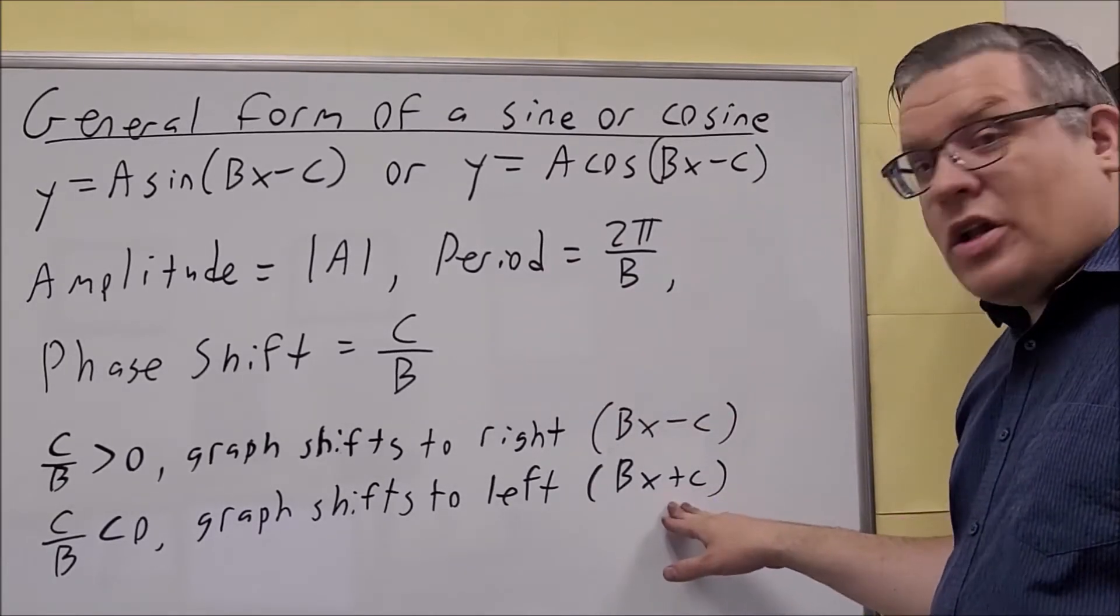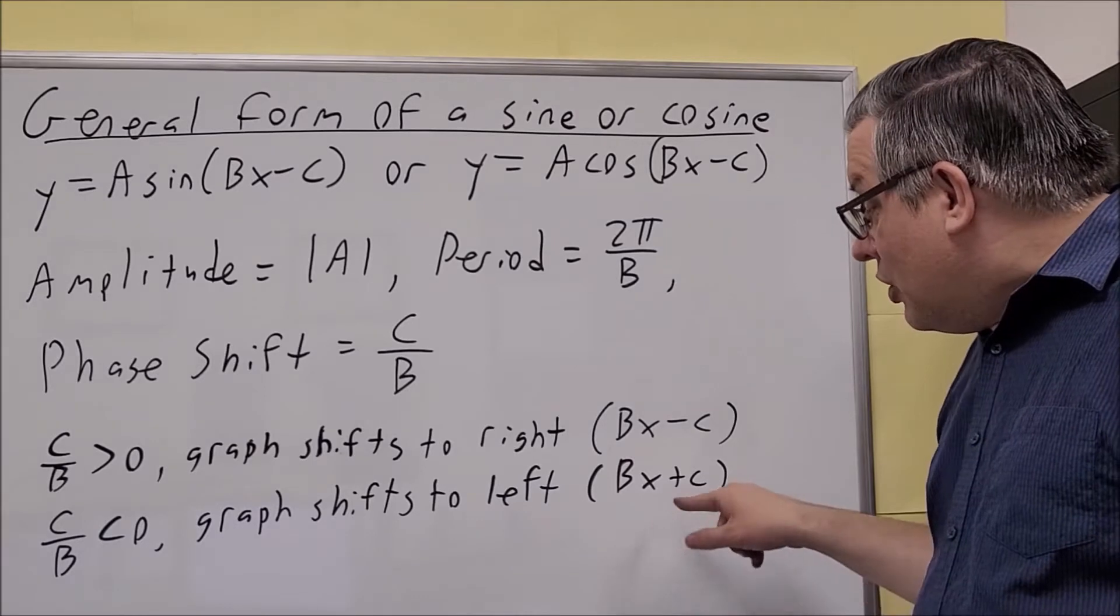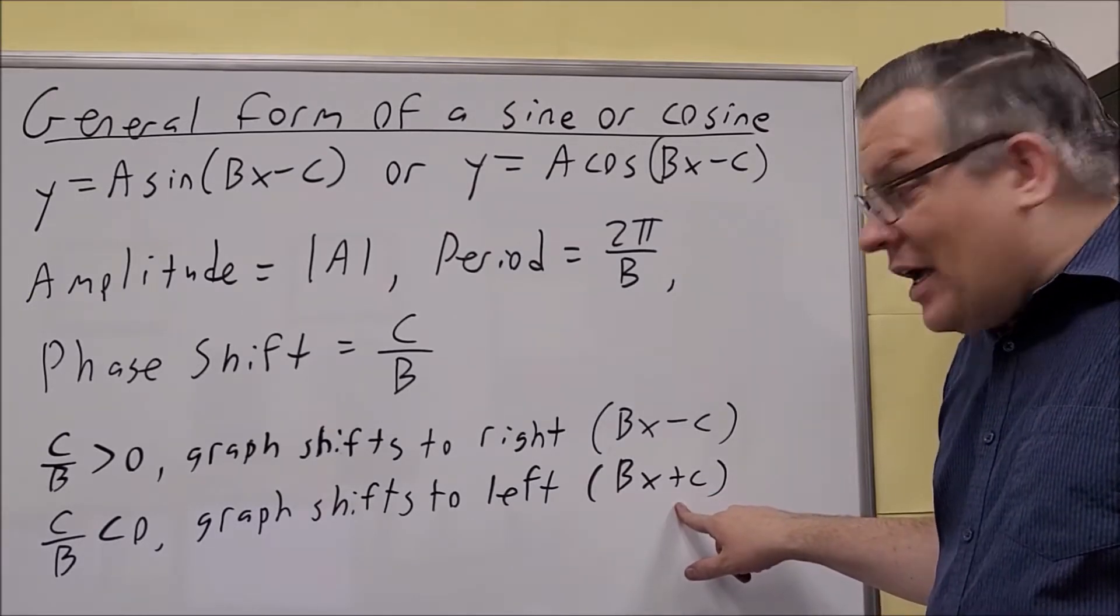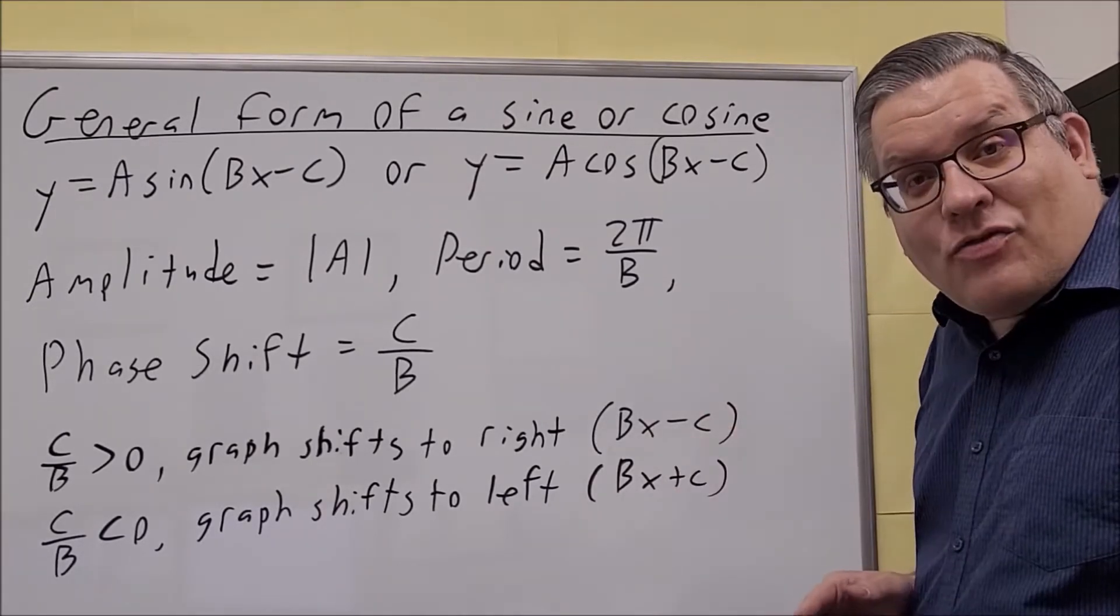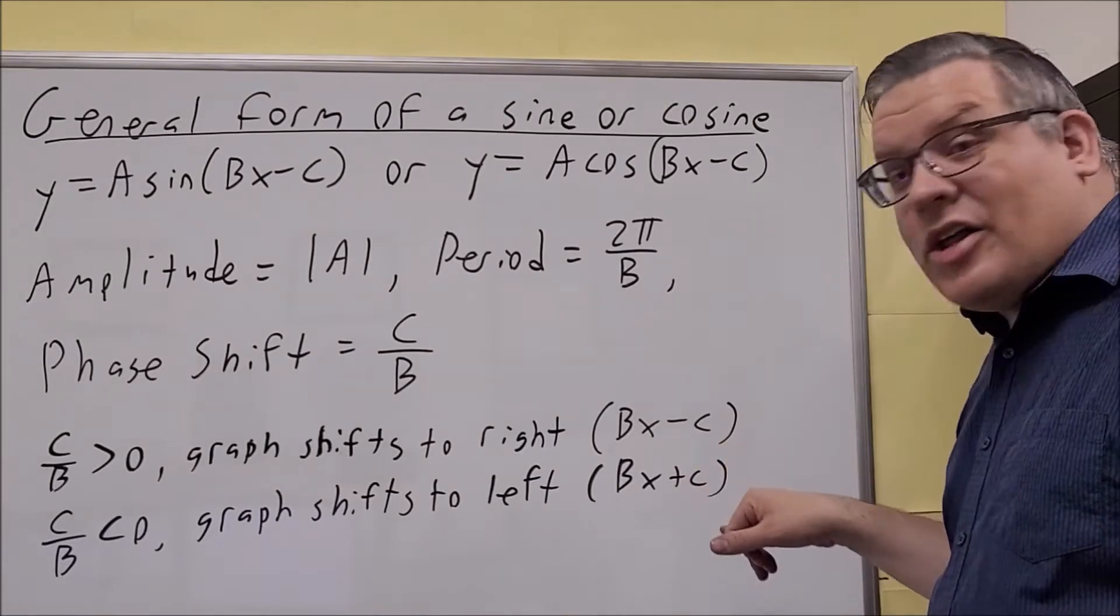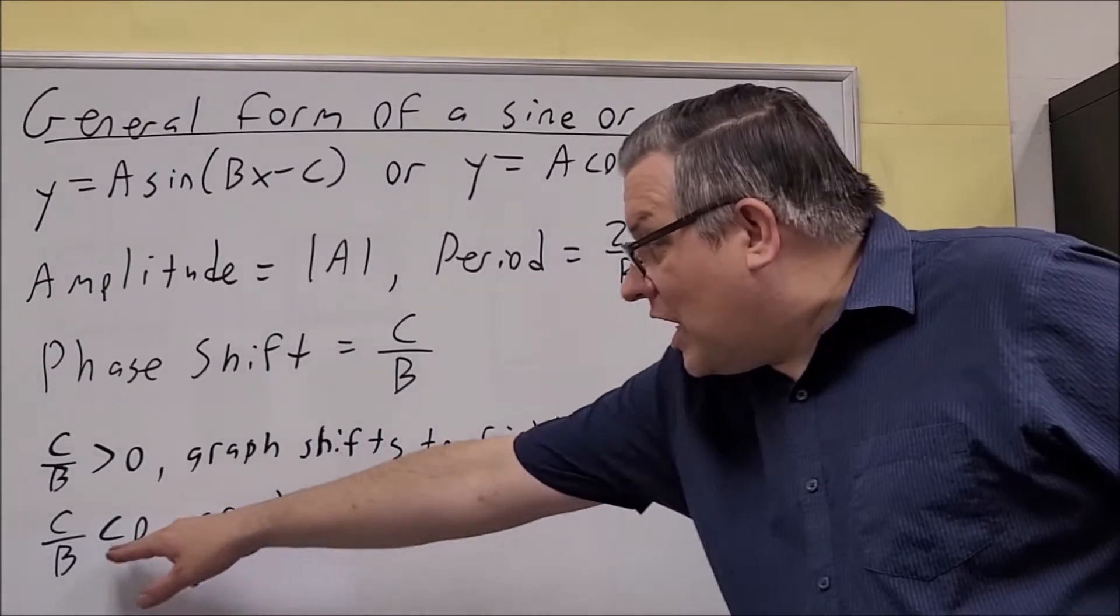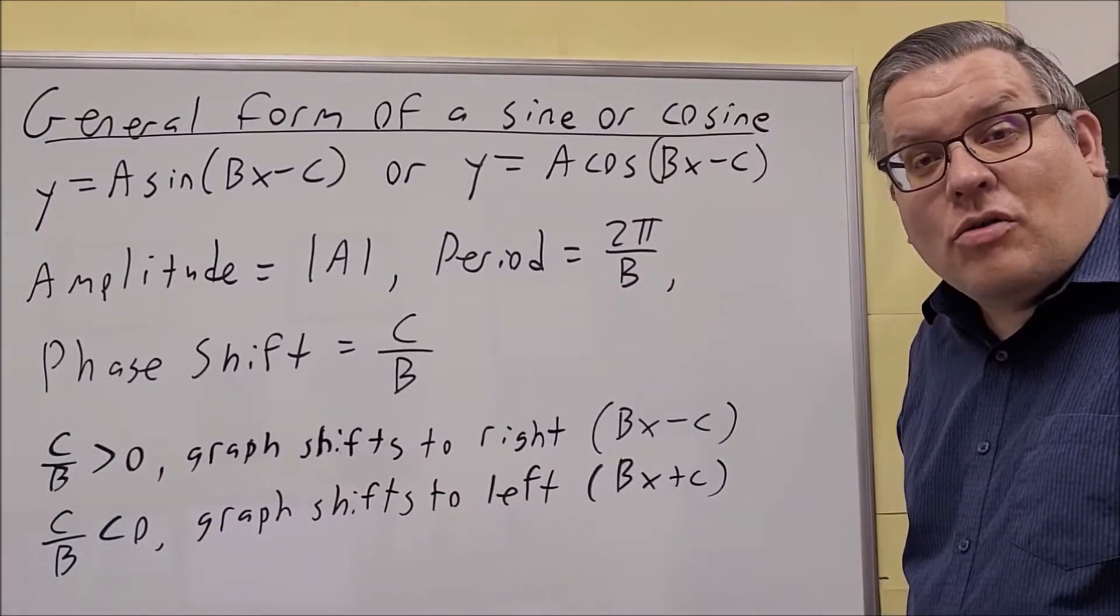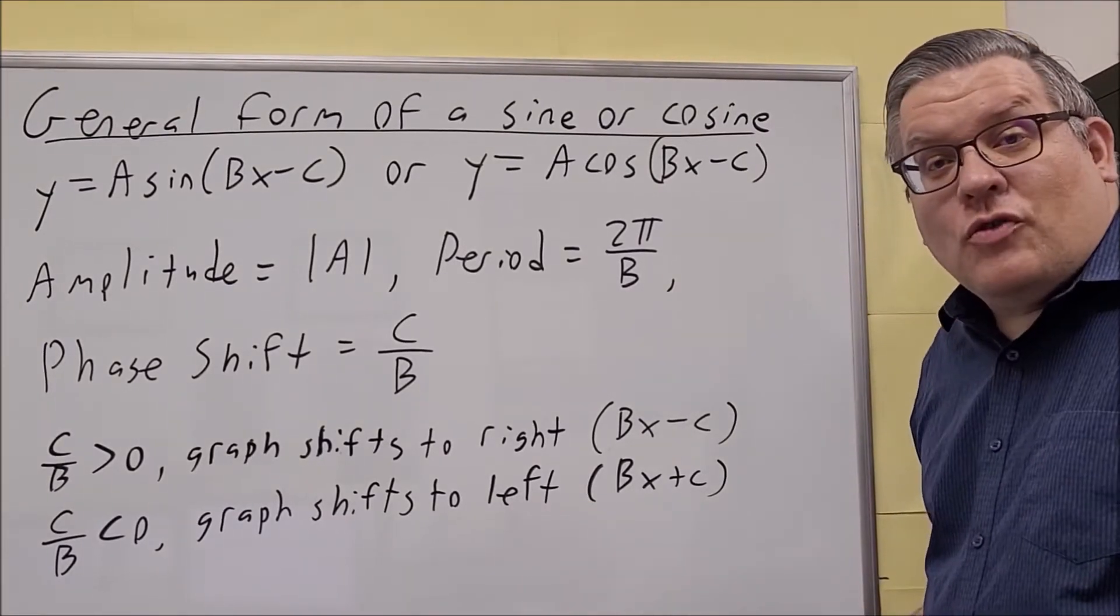However, if it's written this way, if it's written as Bx plus C, you can rewrite that as subtracting a negative. And so then the C value ends up being negative, which means that you have your C over B is less than zero. And that means the graph is going to move to the left.